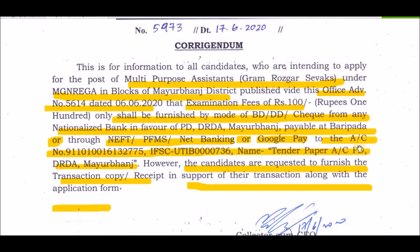Mention the IFC, HG name, HG tender paper, CPD, DRD. The address is mentioned once. Payment can be made online via Google Pay or net banking. After making payment, take a printout of the transaction copy as received confirmation. Print the card and attach it to the document.